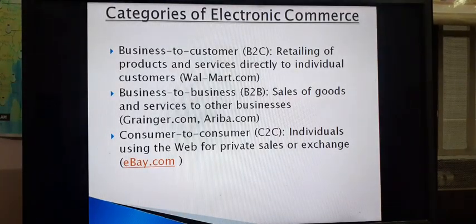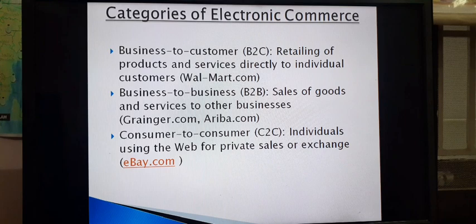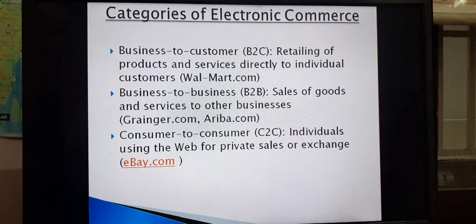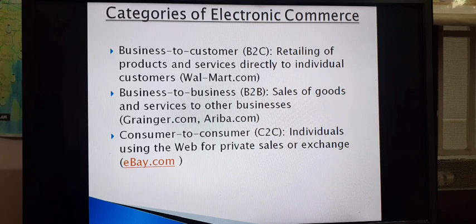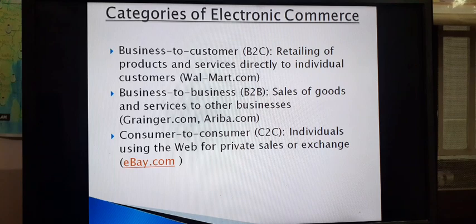Next are the categories of electronic commerce. First is B2C — business to consumer — where products are sold from a business unit to customers; an example is Walmart. Next is B2B — business to business — where goods are sold only between business units; large business units sell to smaller ones; examples include Arabia.com and Grainger.com. Next is C2C — consumer to consumer — where individuals use the web for private sales or exchange; the best example is eBay.